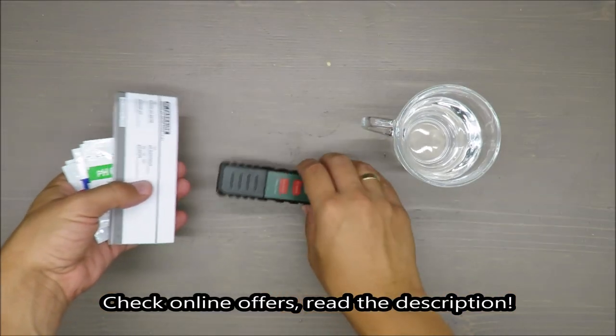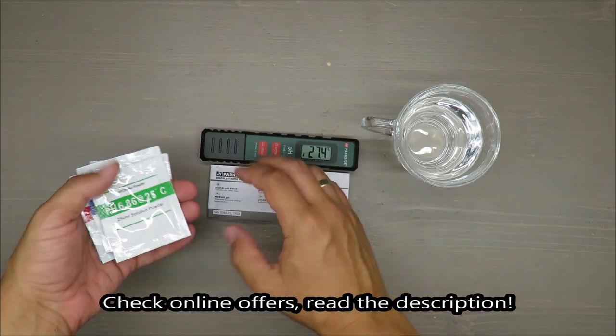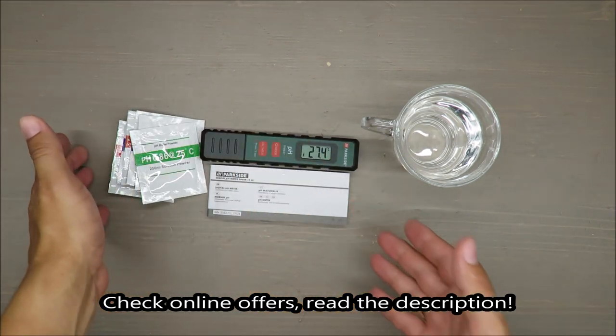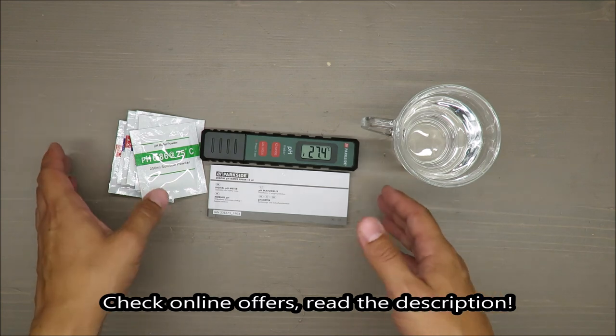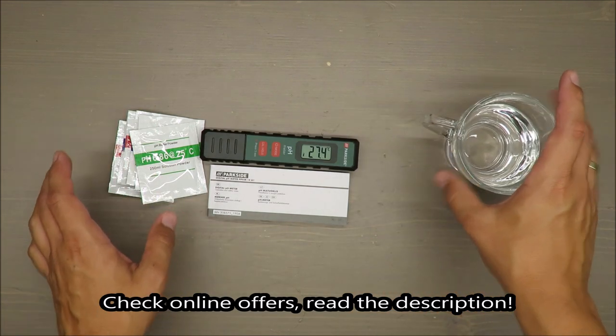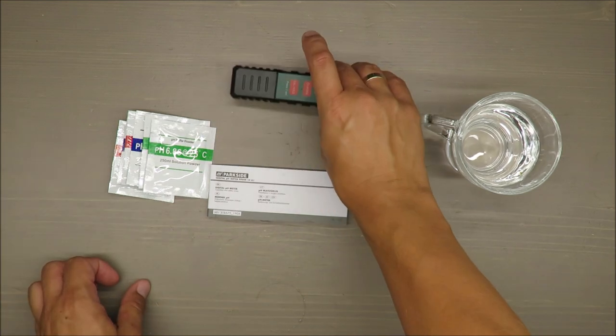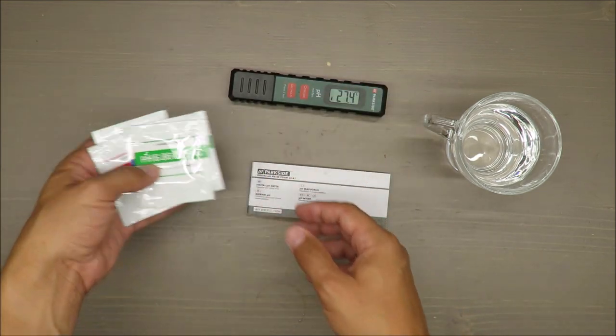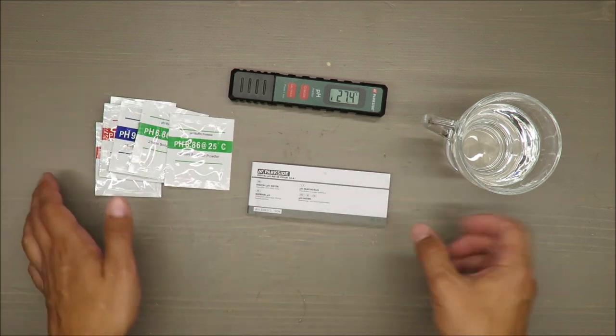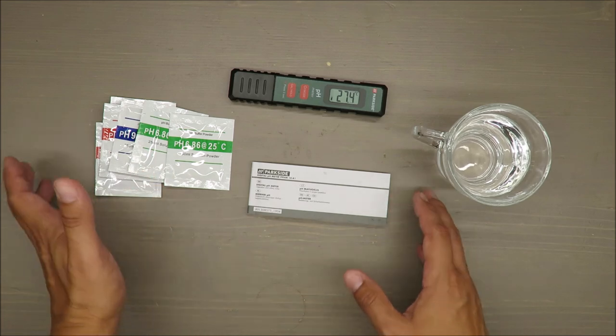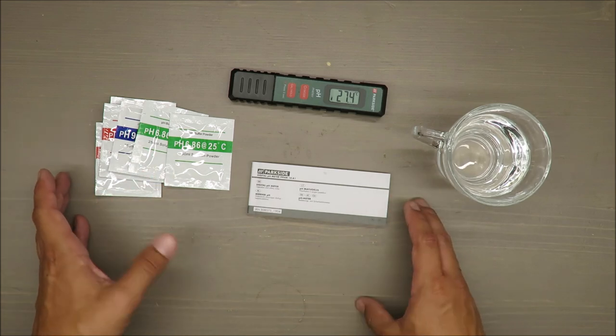Hello everybody, this is Out of the Box Unboxing and in today's episode I'm going to act like a chemist because I'm going to make a digital pH meter review. For that what we need is a pH meter, manual, some buffer powder, and a glass of water.